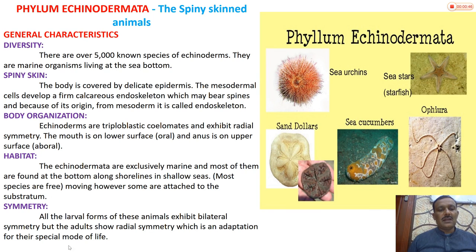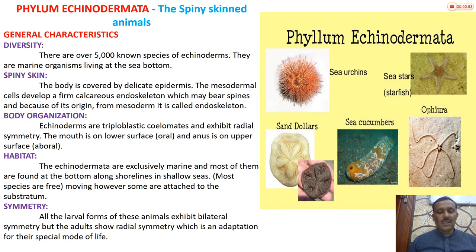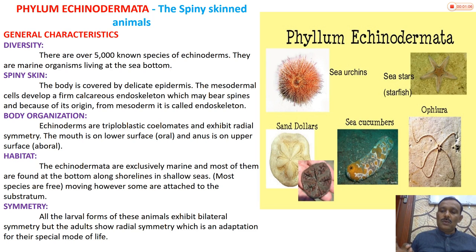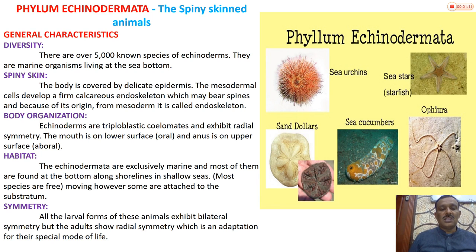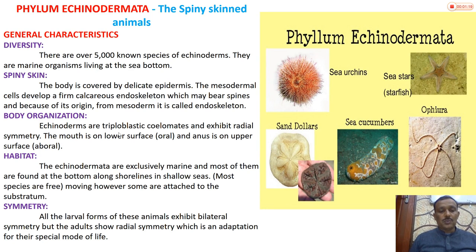Regarding spiny skin: the body is covered by a delicate epidermis. The mesodermal cells develop a firm calcareous endoskeleton - a calcium-based skeleton forms inside the body. Spines from this skeleton protrude outward through the epidermis. Because of its origin from mesoderm, it is called endoskeleton.